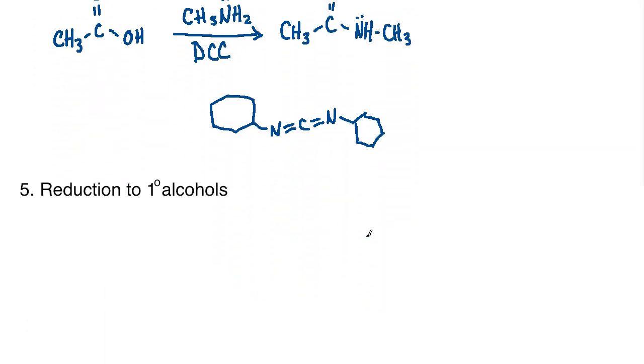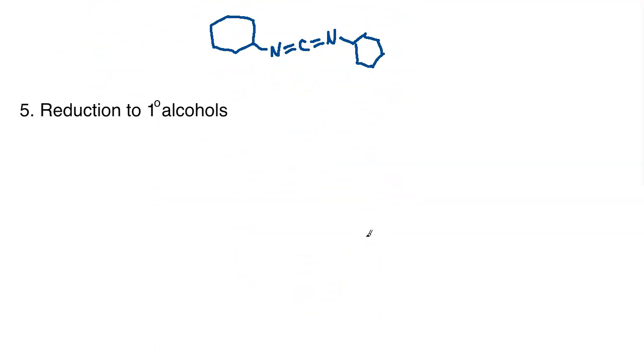And then number five is reduction to primary alcohol. So if you have gone through alcohol lectures, this may be a review to you at this point, because it is often taught as one of the reactions when people are first studying alcohols, because it's a very convenient way to make primary alcohols, provided you have an ester or a carboxylic acid.